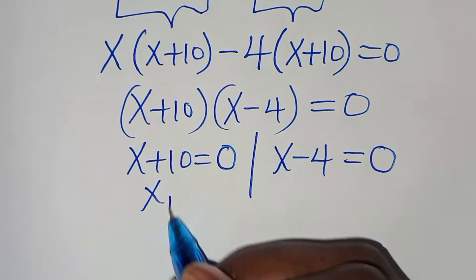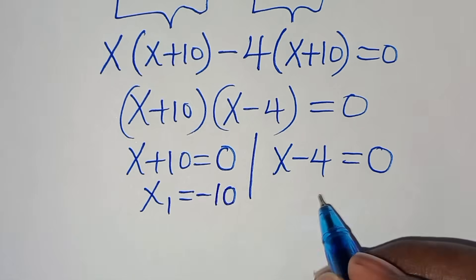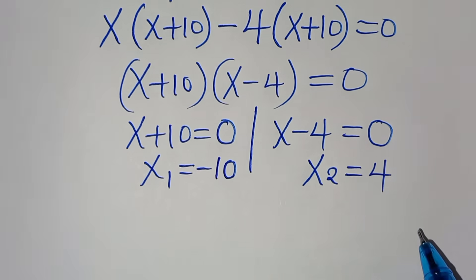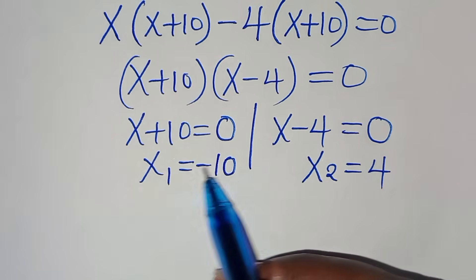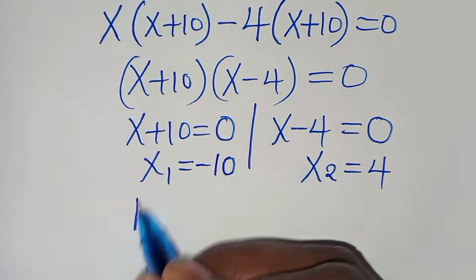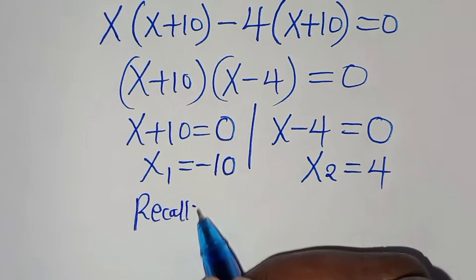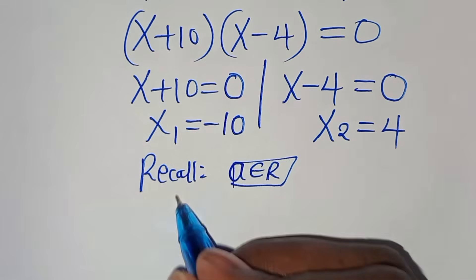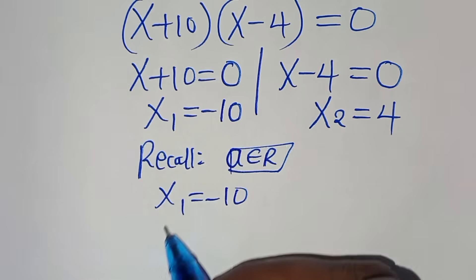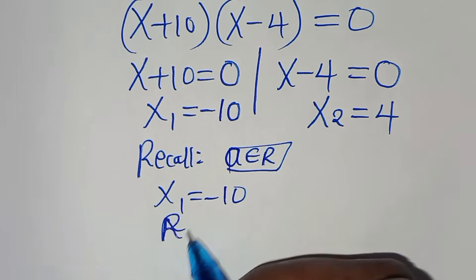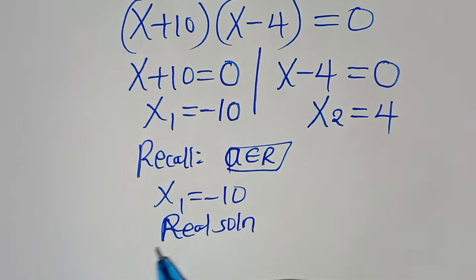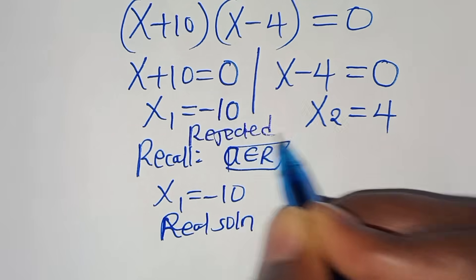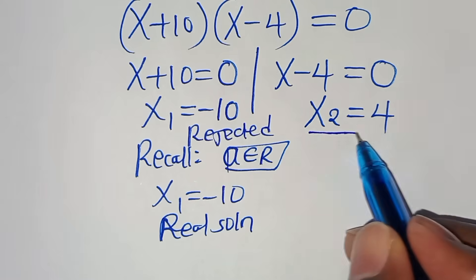So x₁ = −10 and x₂ = 4. Since a must be a real number, x = u² cannot be negative, so x₁ = −10 is rejected. We focus on x₂ = 4.